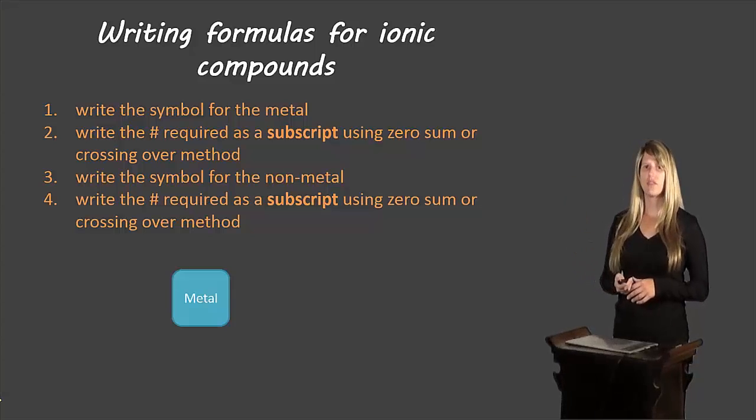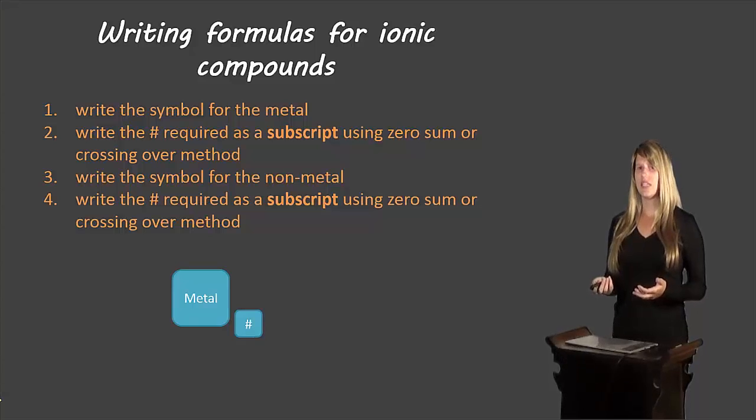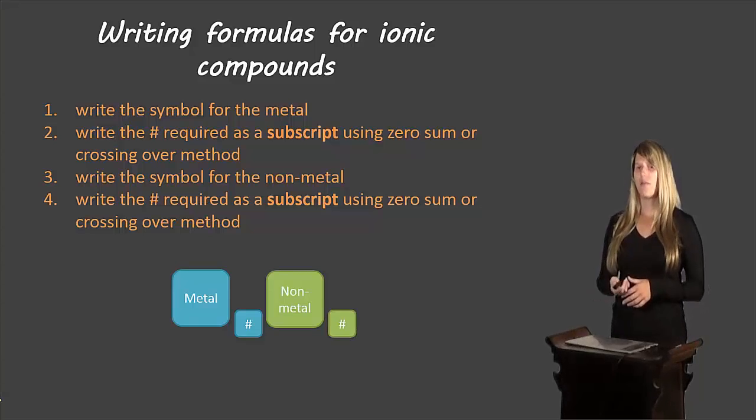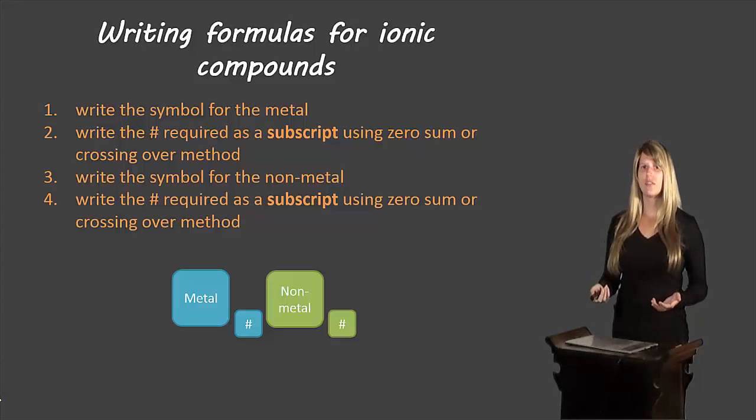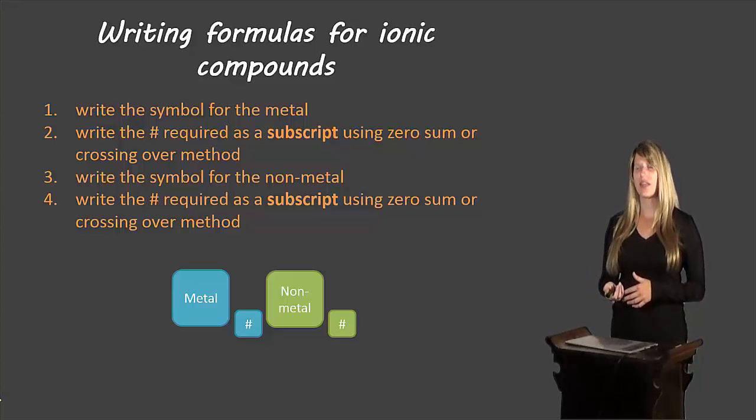So here's another way of looking at it. You would write the symbol for the metal. You write how many of that metal you need, and you would use either the zero sum or crossing over method. You would write the symbol for the non-metal, and then how many of that you need using either the zero sum or crossing over methods.